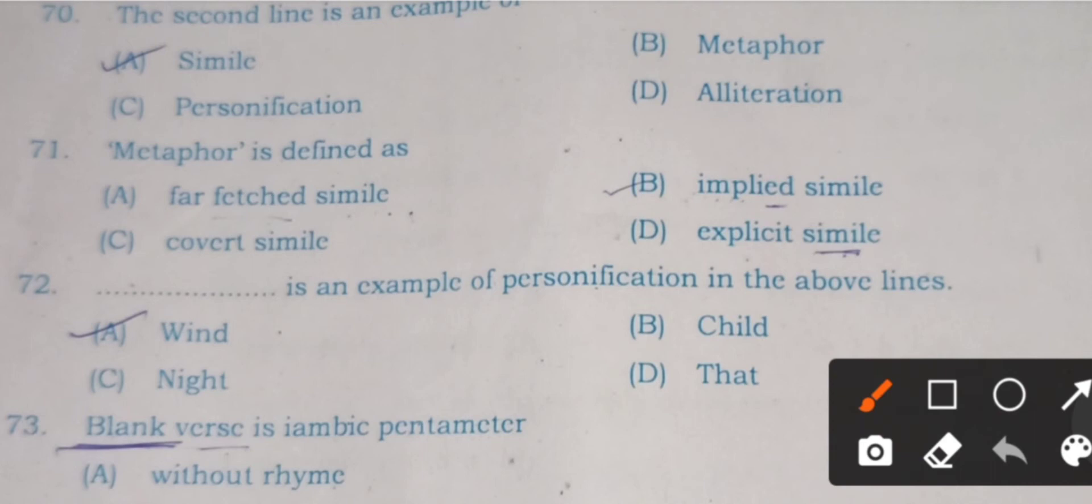Question 71: Metaphor is defined as A) far-fetched simile, B) implied simile, C) covert simile, and D) explicit simile. Metaphor is comparison without the use of 'as' or 'like'. Life is a walking shadow is an example of metaphor.